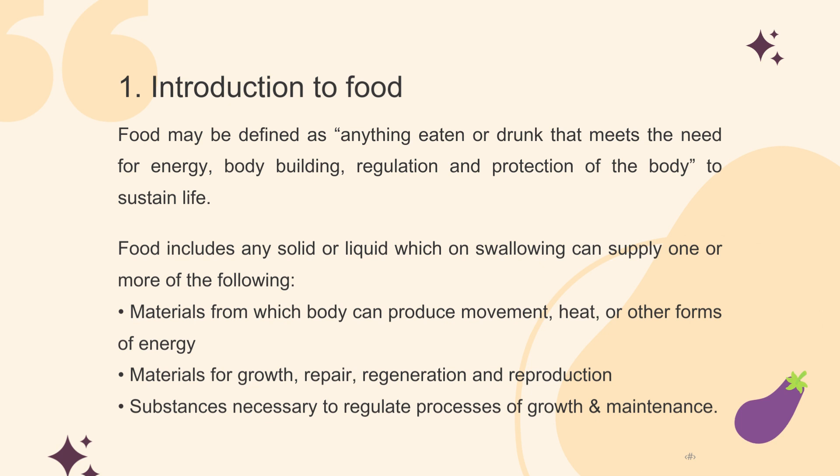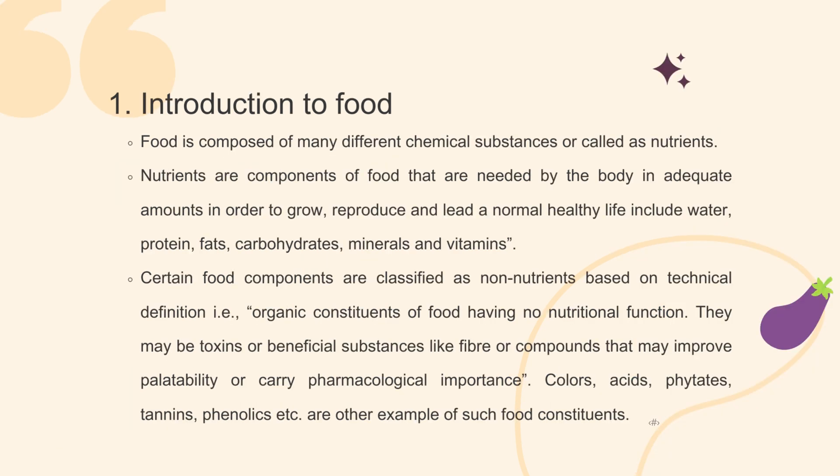First, materials from which the body can produce movement, heat, or other forms of energy. Second, materials for growth, repair, regeneration and reproduction. And third, substances necessary to regulate processes of growth and maintenance. Food is composed of many different chemical substances called nutrients. Nutrients are components of food needed by the body in adequate amounts in order to grow, reproduce and lead a normal healthy life, including water, protein, fats, carbohydrates, minerals and vitamins.